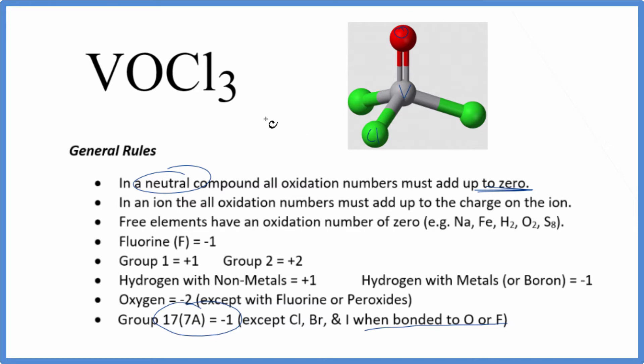So we know that the oxygen is going to be minus 2, and we know that each chlorine is going to be minus 1 because the chlorines are bonded to the vanadium, not the oxygen. Small point, but it's important that we check these things.